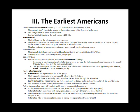Pueblo Indians were the first American corn growers. They lived in adobe houses and pueblos — villages of cubicle-shaped adobe houses stacked one on top of the other, often beneath cliffs. They had elaborate irrigation systems to draw water away from rivers to grow corn.